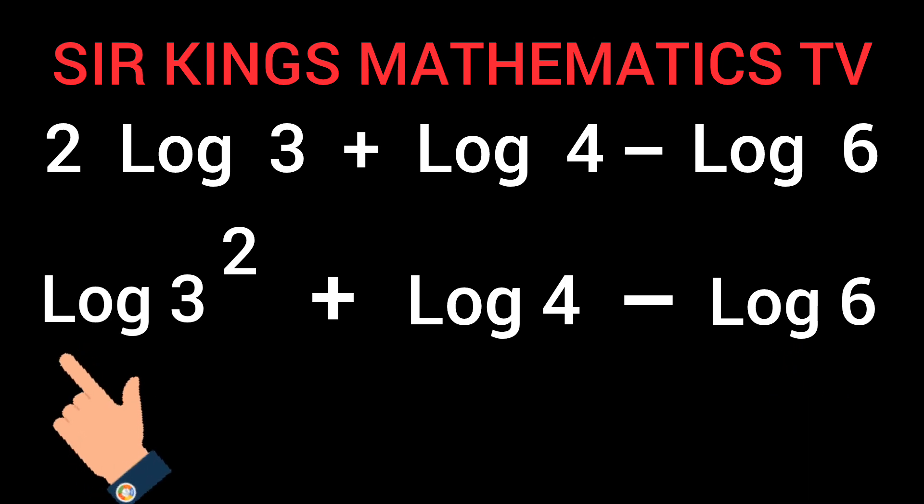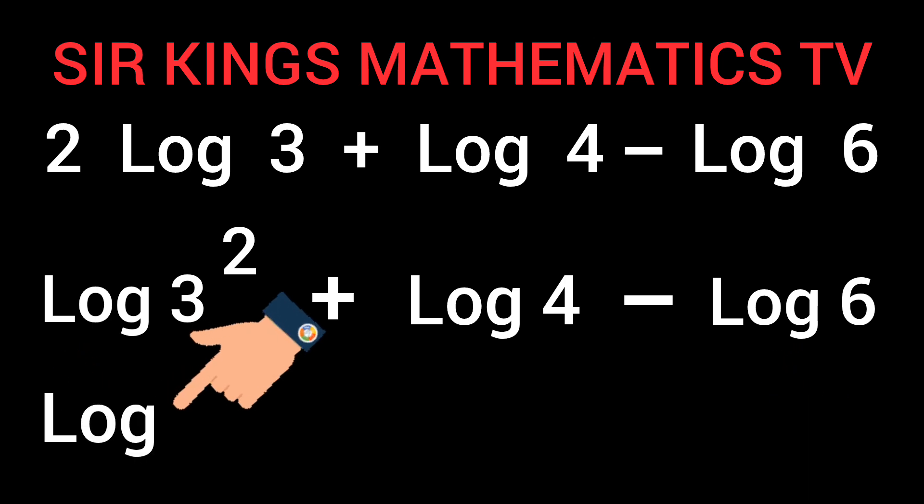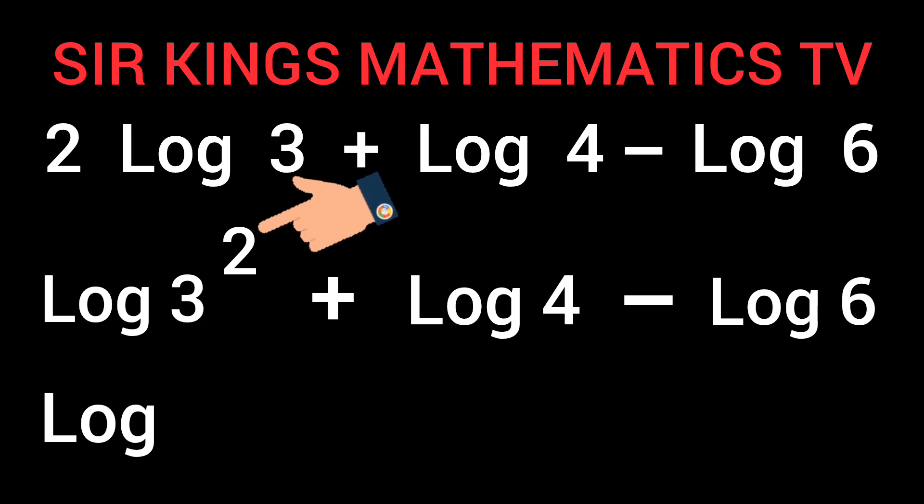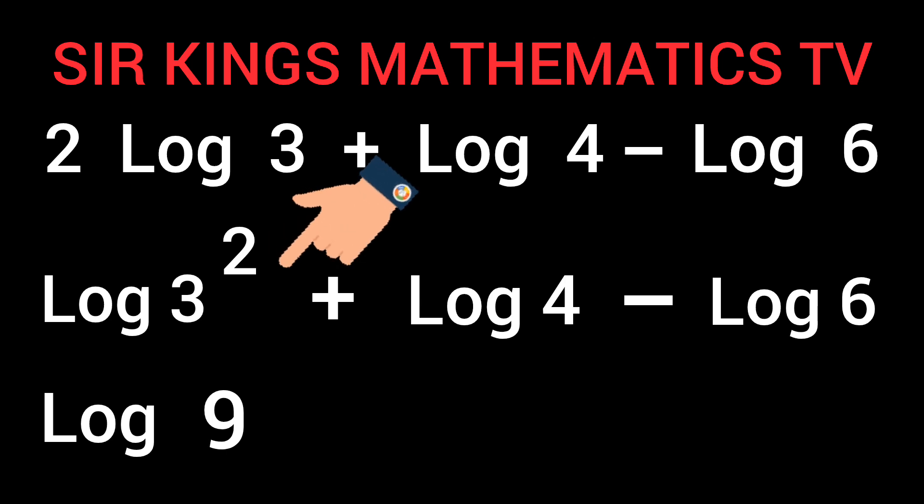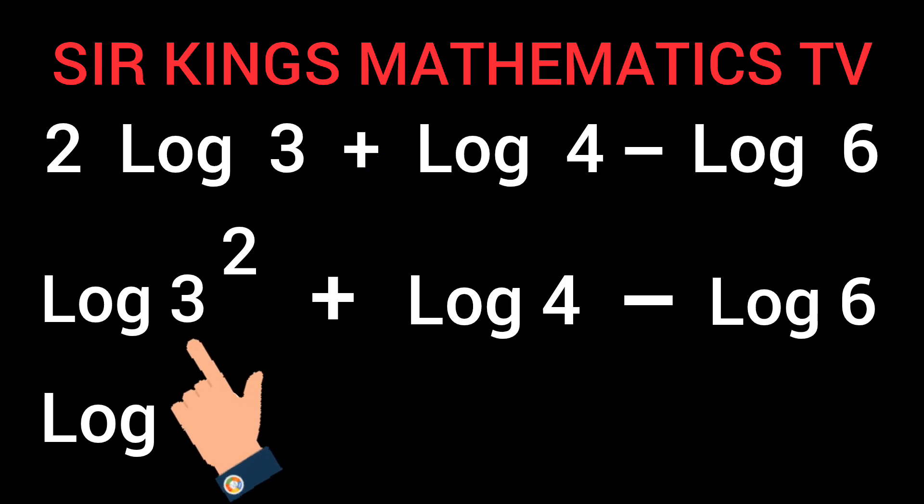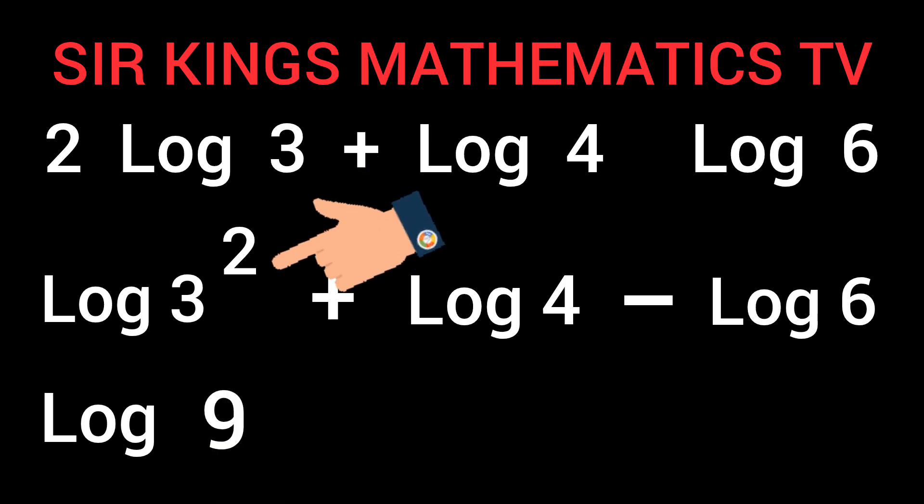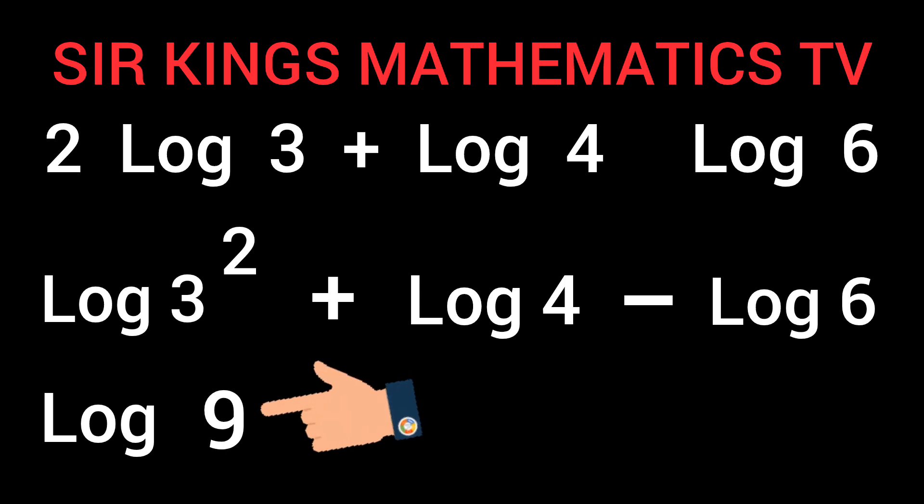This log, write it down here. Now, 3 to power 2 would give us 9. Remember, this 2 shows that this 3 is into 2 places. Therefore, 3 to power 2 is the same thing as 3 times 3, and 3 times 3 will give us 9.